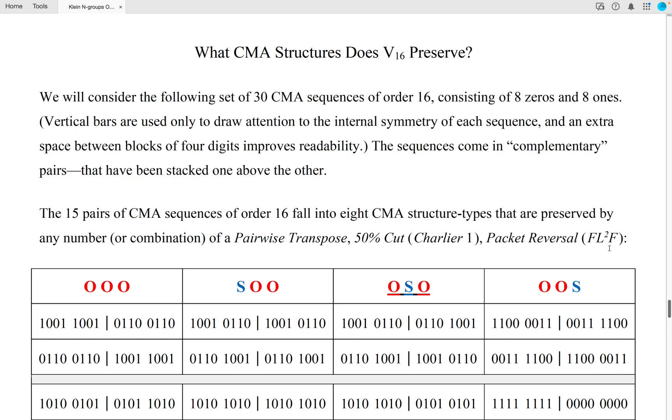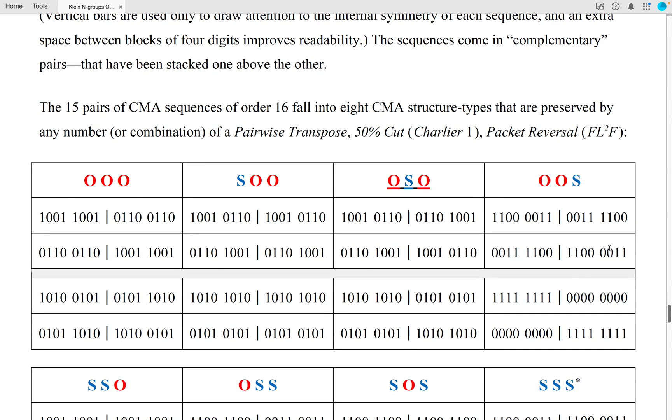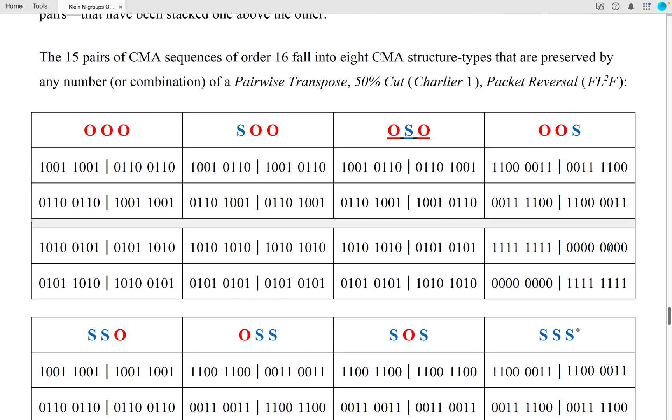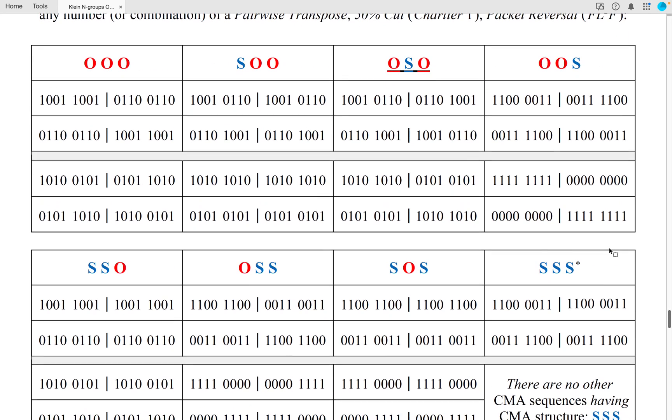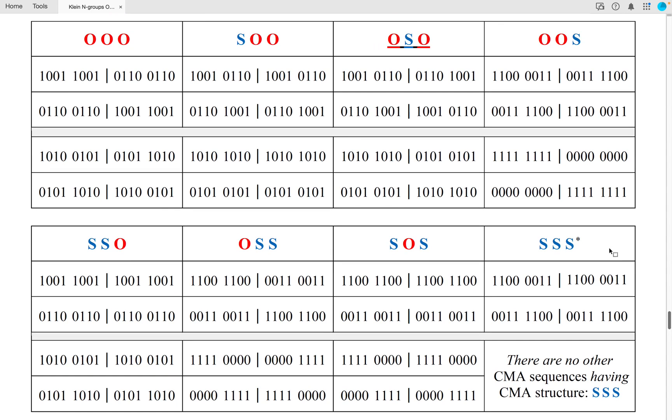So here are the eight CMA structure types: OOO, SOO, OSO, OOS, and SOO, OSS, SOS, and SSS. Something interesting happens in the last case. There's only one complementary pair of SSS CMA sequences, which is rather curious given the completion of this table that results in two sets of pairs for each of the other CMA structures.